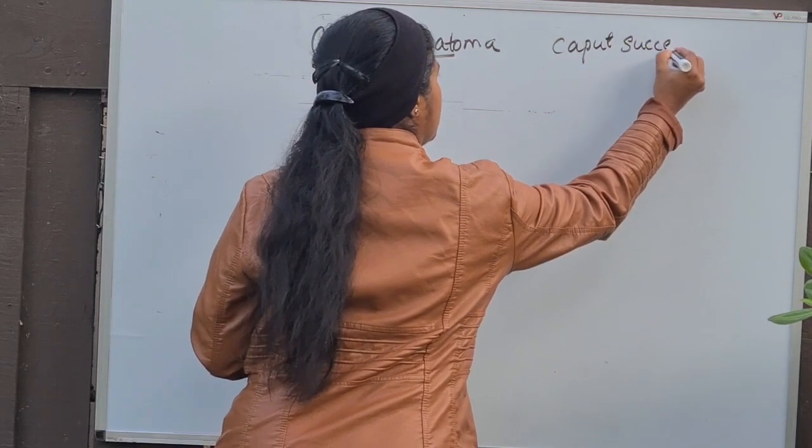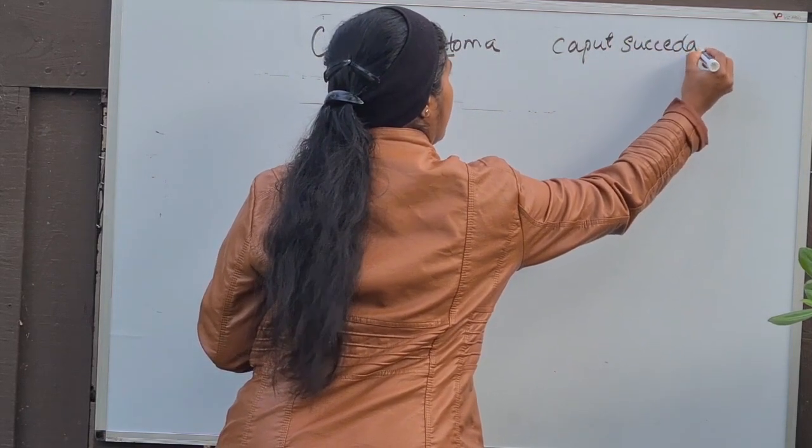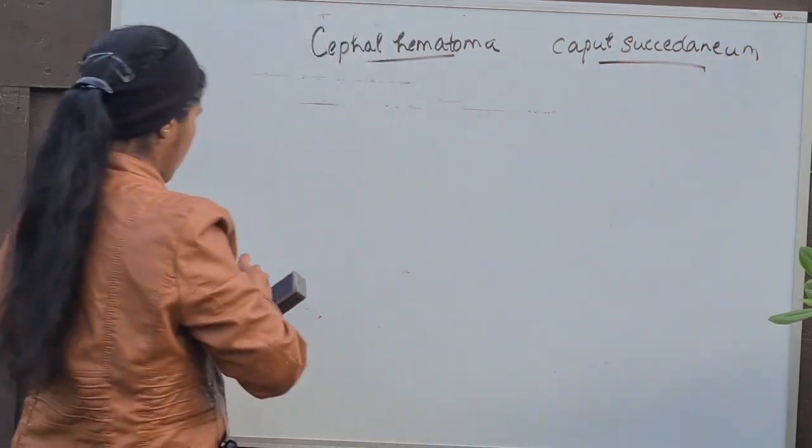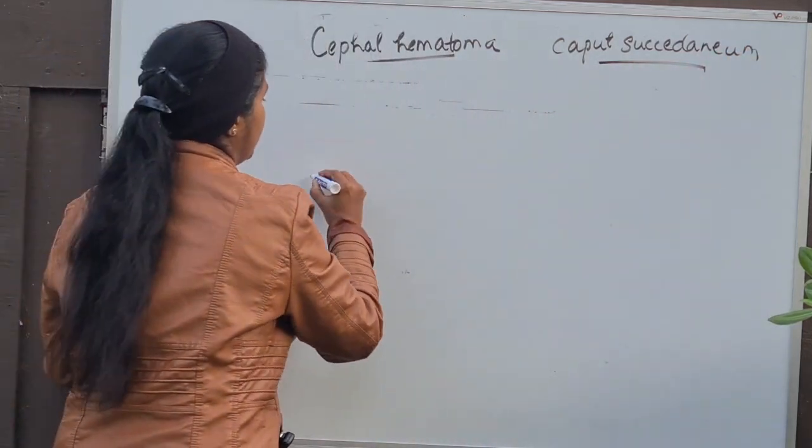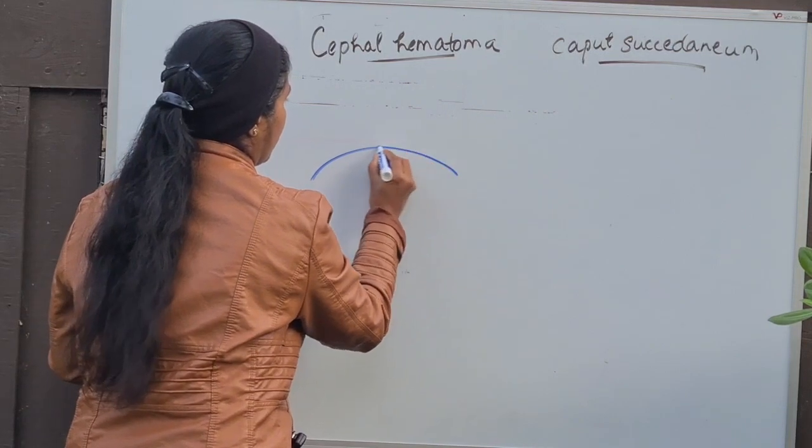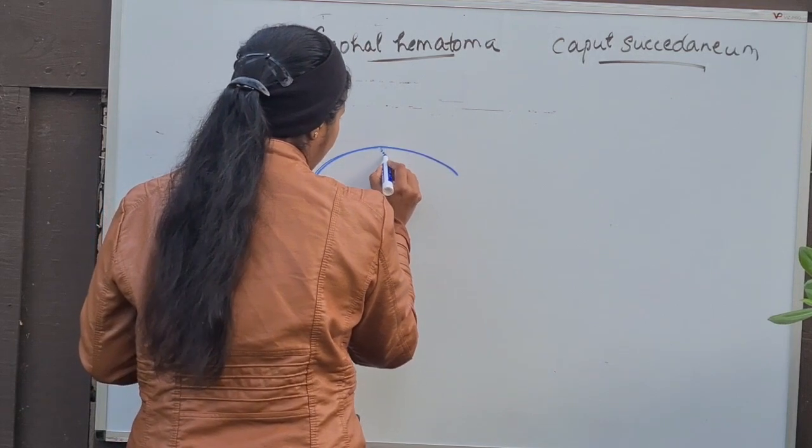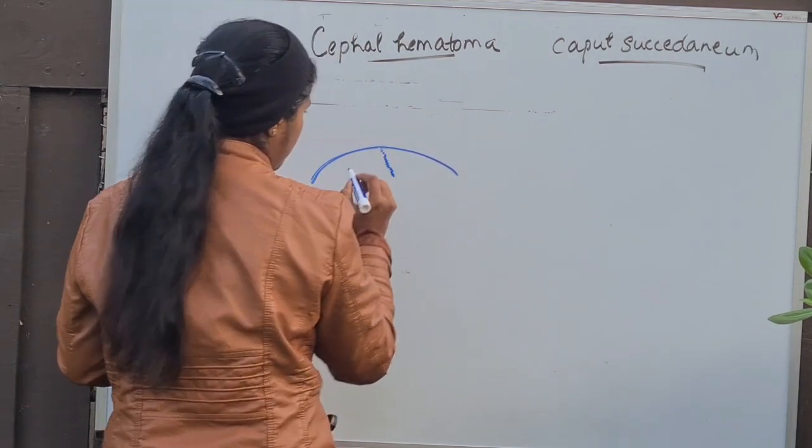What is the simple anatomy we are supposed to know? Say for example, this is the skull of any neonate or baby.